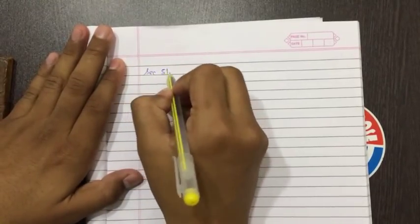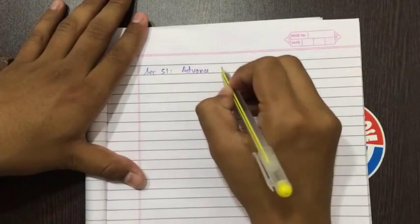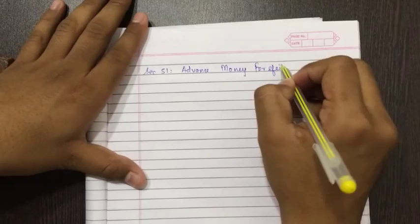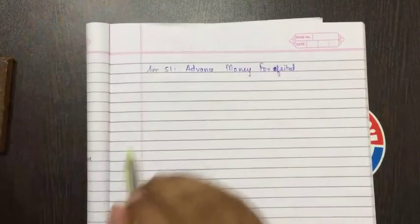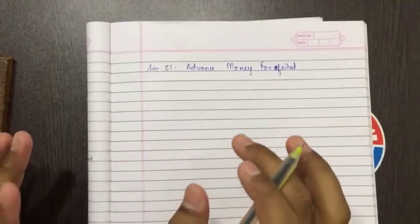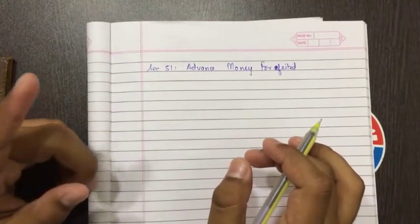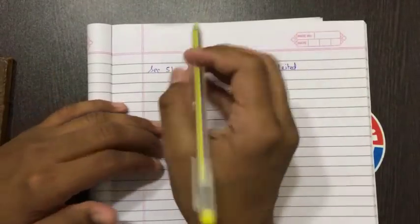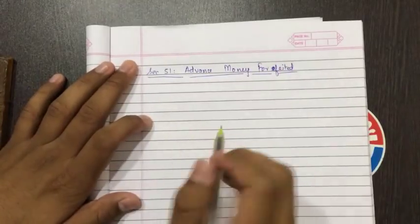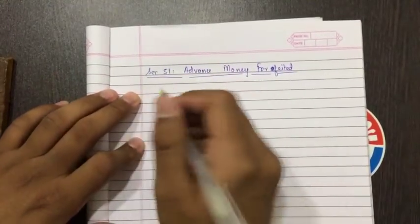Let's start with Section 51. What is Section 51? Advanced Money Forfeited. I hope this section came in May 16 exam. I don't have any surety that it came or not, but I have read the question paper. I am not recalling it right now. So let's continue. Section 51 Advanced Money Forfeited. What is this Advanced Money Forfeited?